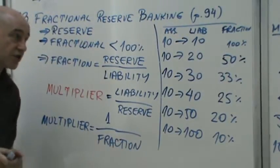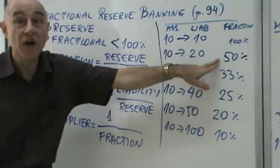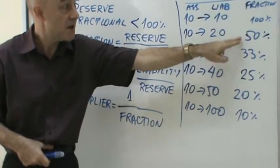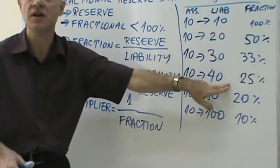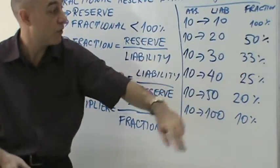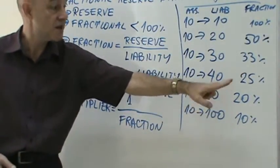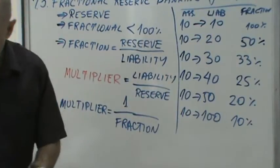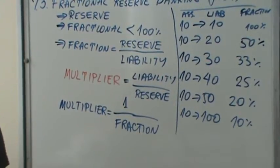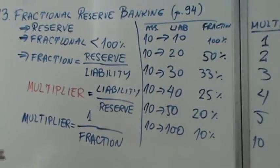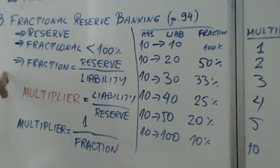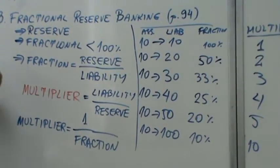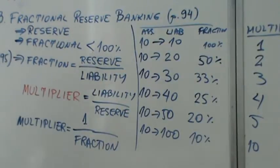The multiplier equals one over the fraction. One over 50% is two; one over 33% is three; one over 25% is four; one over 20% is five. This relationship is on page 95.